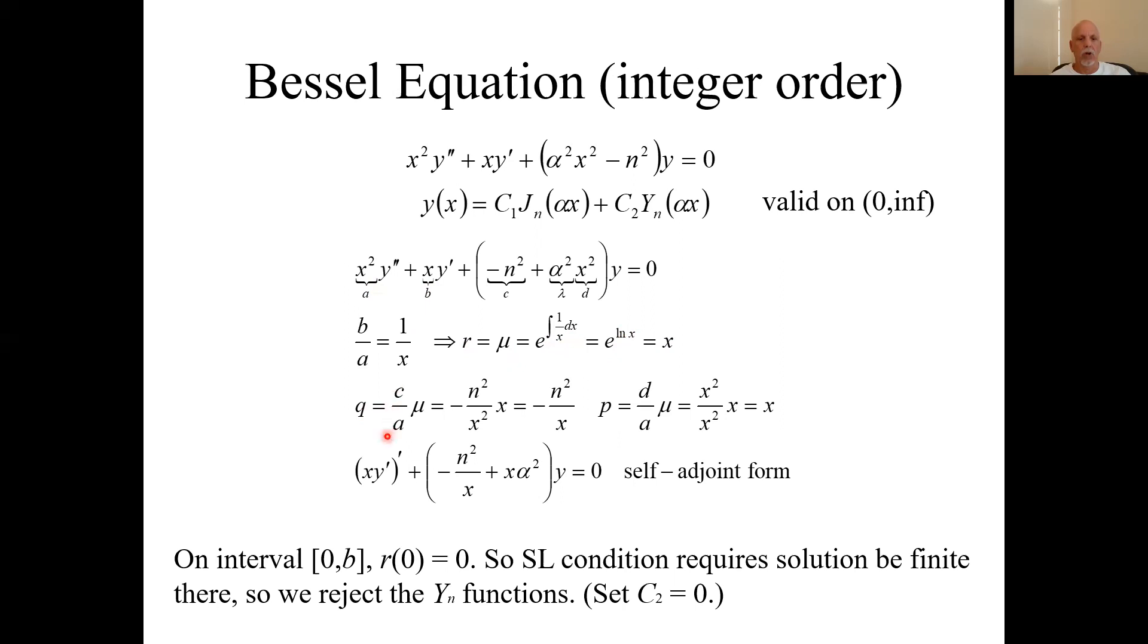Q was C over A times mu. C was minus n squared. A was x squared. Mu is x. It ends up being this. D was D over A times mu. D was x squared, A was x squared, so that's just 1. Mu is x, so it's just x.